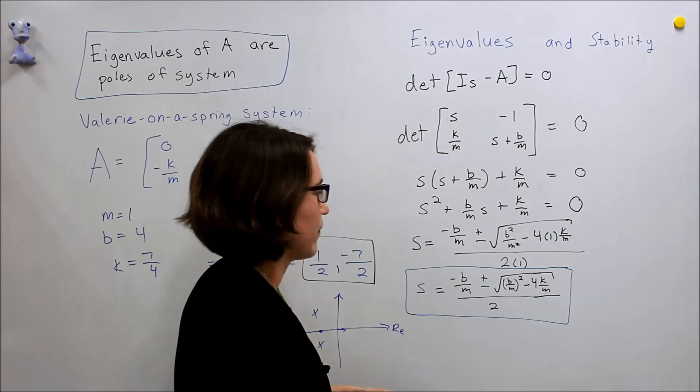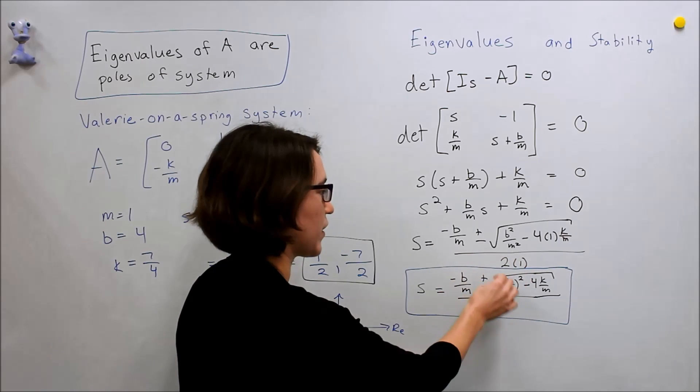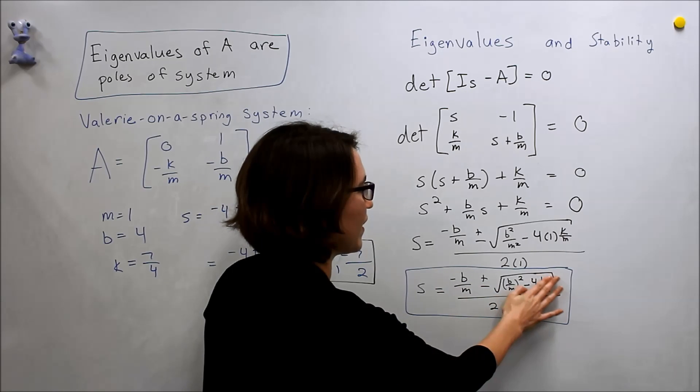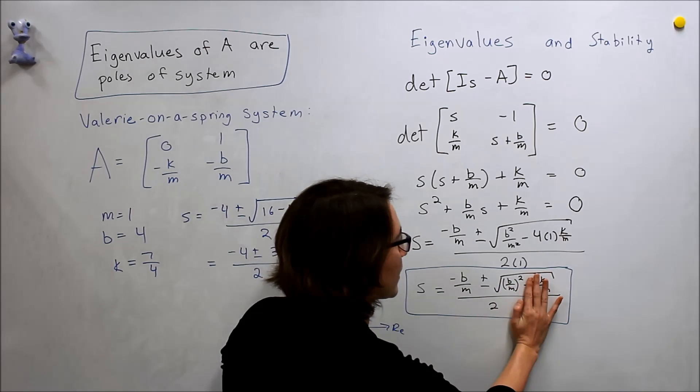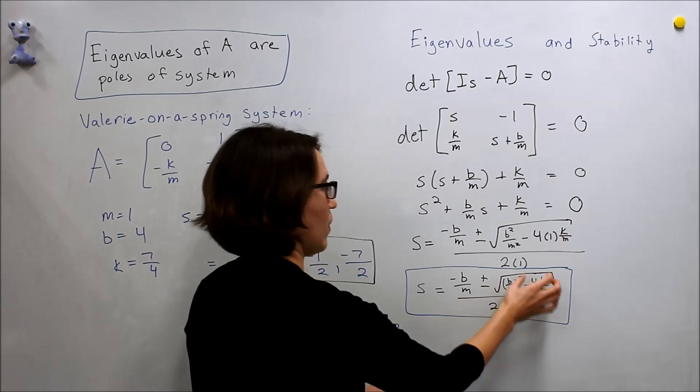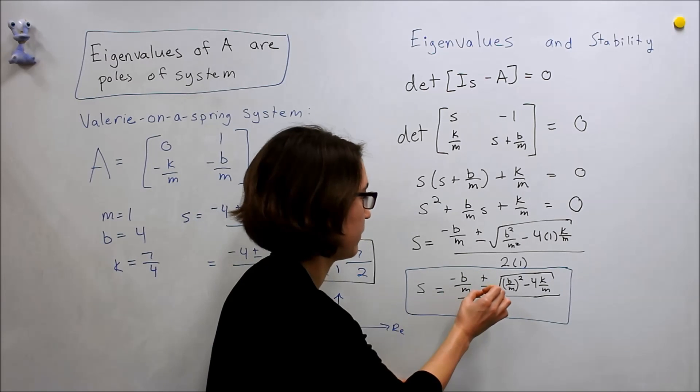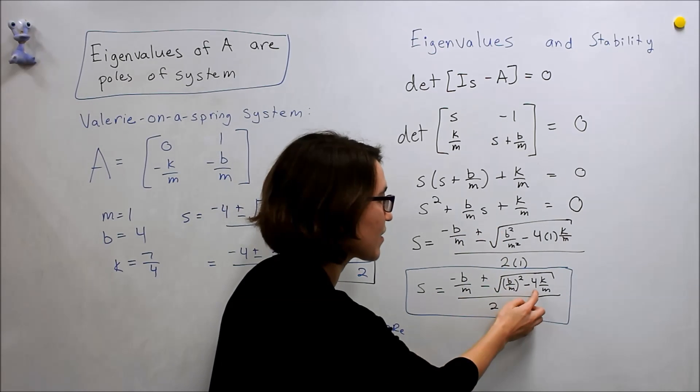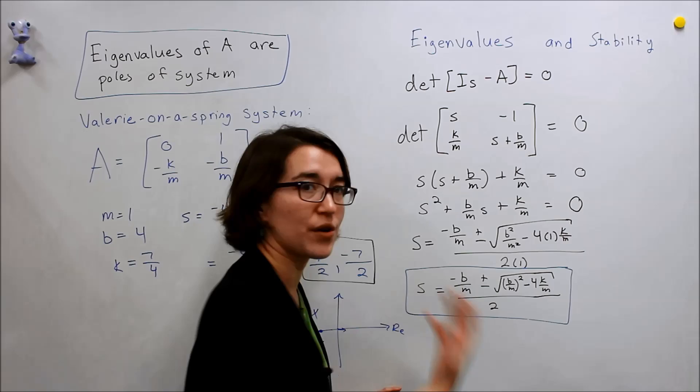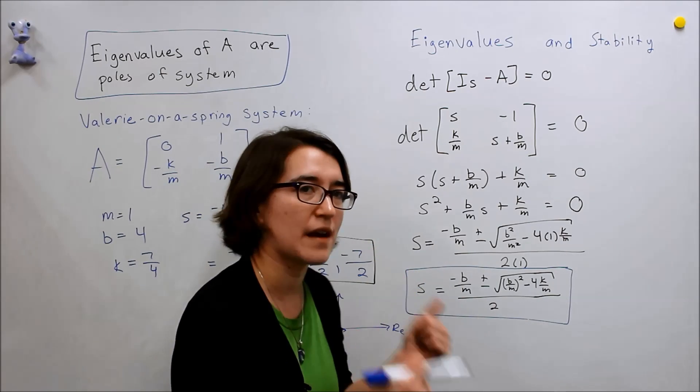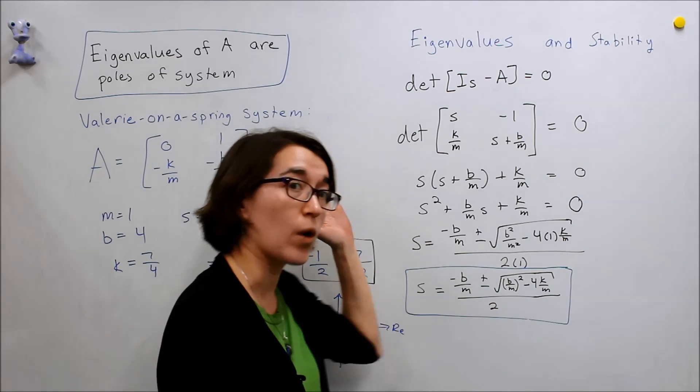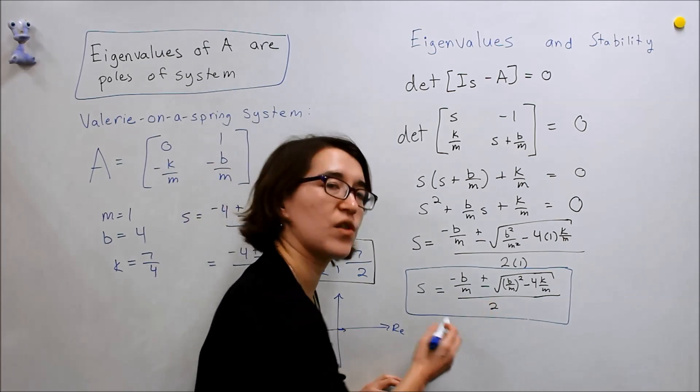But if we look at our system, the only way for that to happen, for this numerator, for this value to be, the numerator to be zero, would be for this thing to be completely zero. So if this value right here is zero, then one of the poles would be zero. But, because these are positive, 4K and M are always going to be positive, it's always going to subtract from this value. These values are also positive, so we will actually never have a value, a pole in the right half plane or on the imaginary axis. So this will actually always be stable.